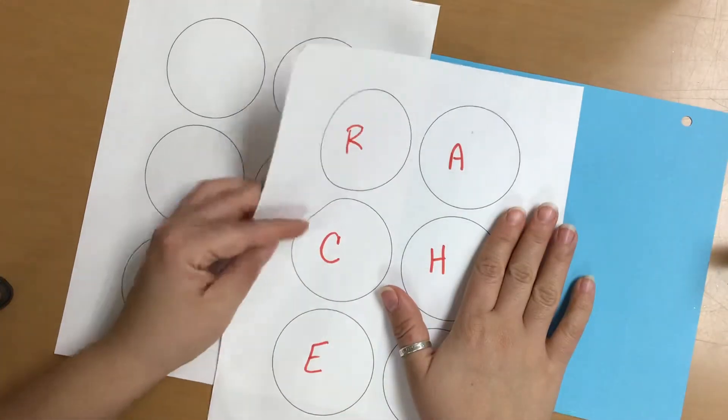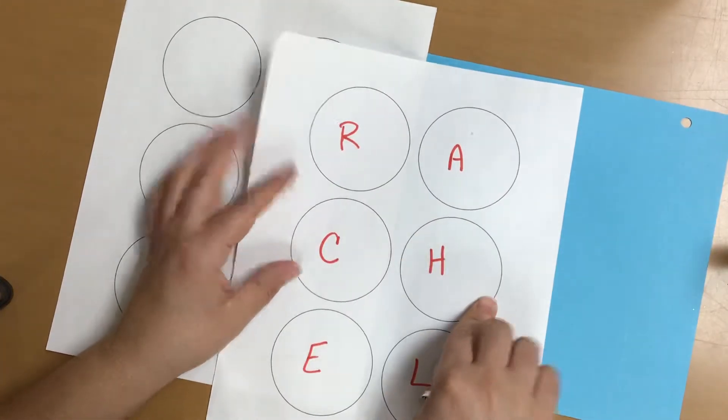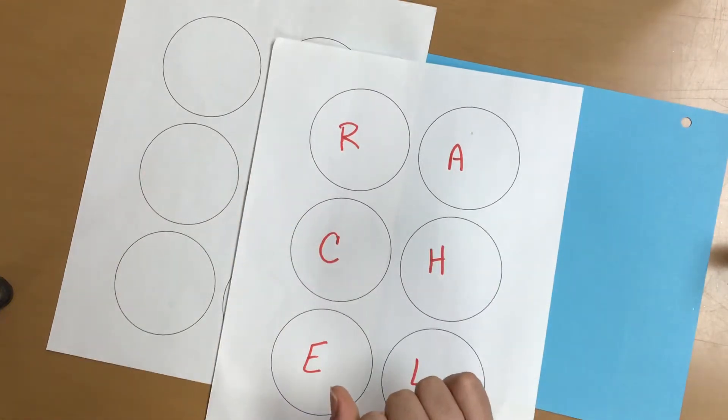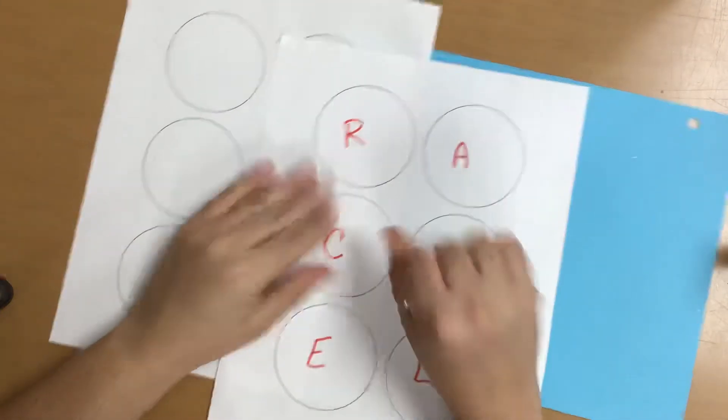So you should have one that has your letters on it. Do you remember how to say your letters with your hands? We can go through the alphabet real quick if you want. Watch for your letters.